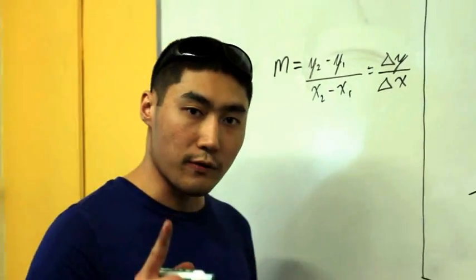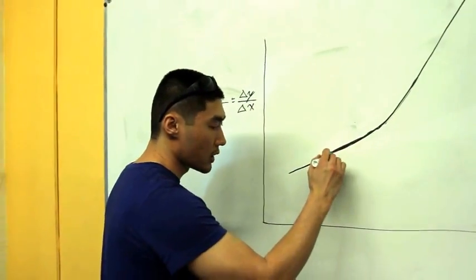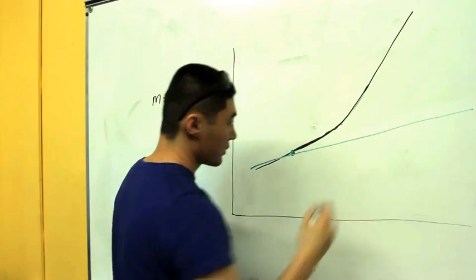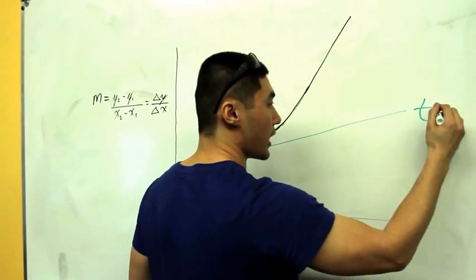And I want to find the slope at a given point. So let's cheat. I know the answer. The line is this, and this is my official tangent line.